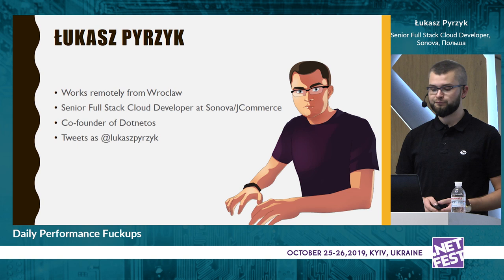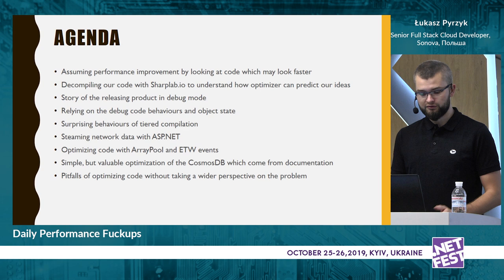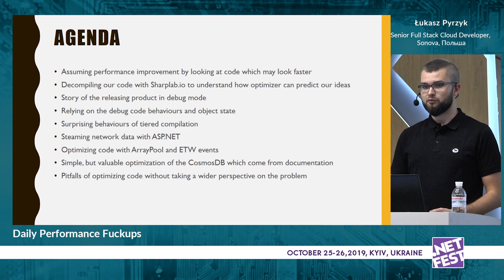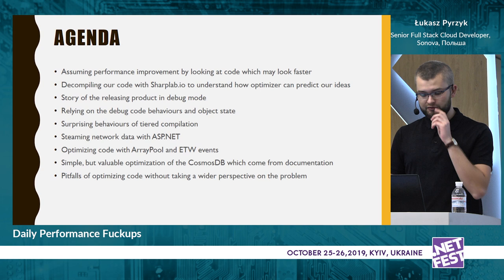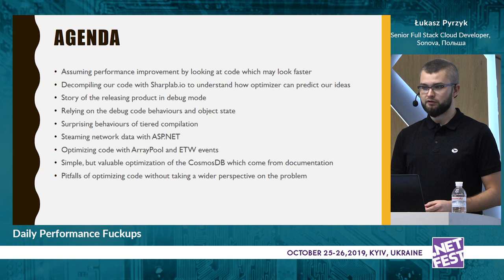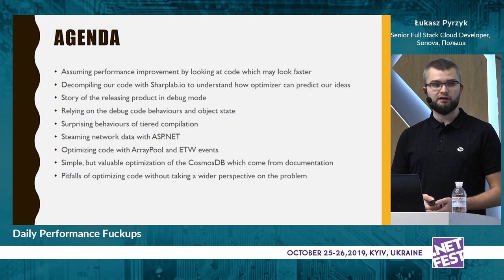Today we are going to speak about a few, maybe simple, maybe not simple, but funny issues. We will try to take a look at code that might look faster but completely is not. We will decompile our code and see how it works under the hood and how the compiler was wise enough to predict our ideas. I will tell you a funny story about releasing a product in debug mode without knowing about it, and we'll see the behaviors of running code in debug versus release. We'll stream some big files, go through array pool, and finish with notes about optimizing using Cosmos DB documentation.